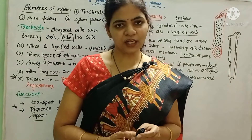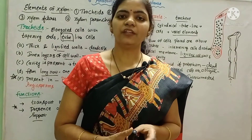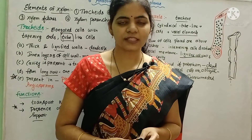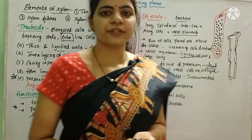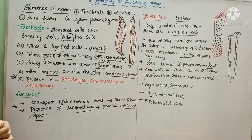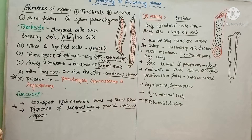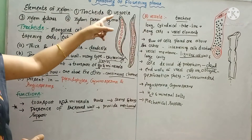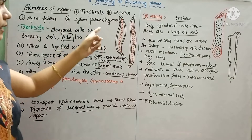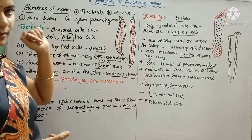Hello everyone. This is Lata Akula. In this video, I will show the elements of the xylem. In my previous video, I showed the properties and types of xylem. The first four elements are tracheids, xylem fibers, and xylem parenchyma.